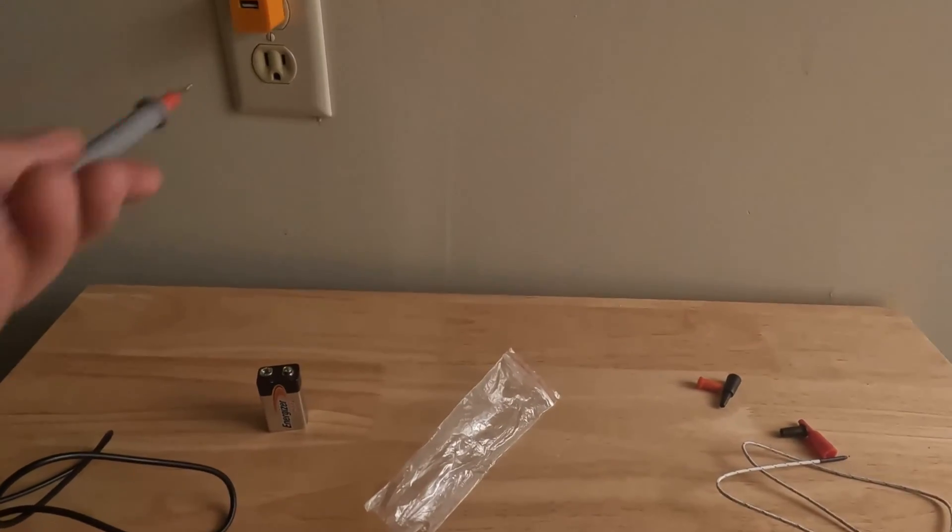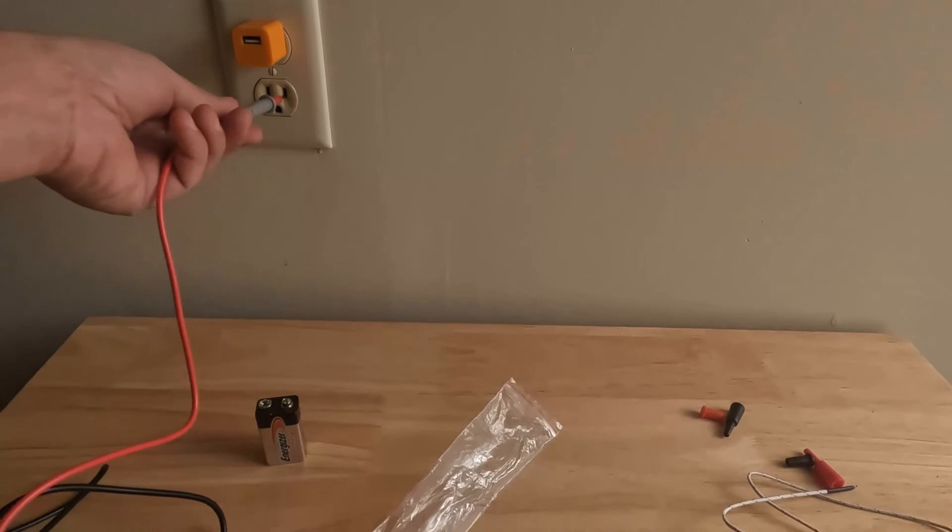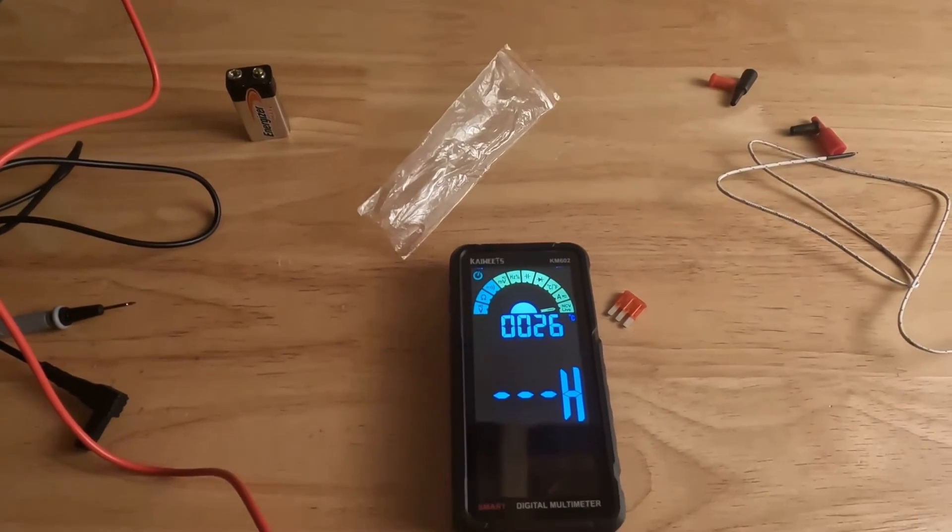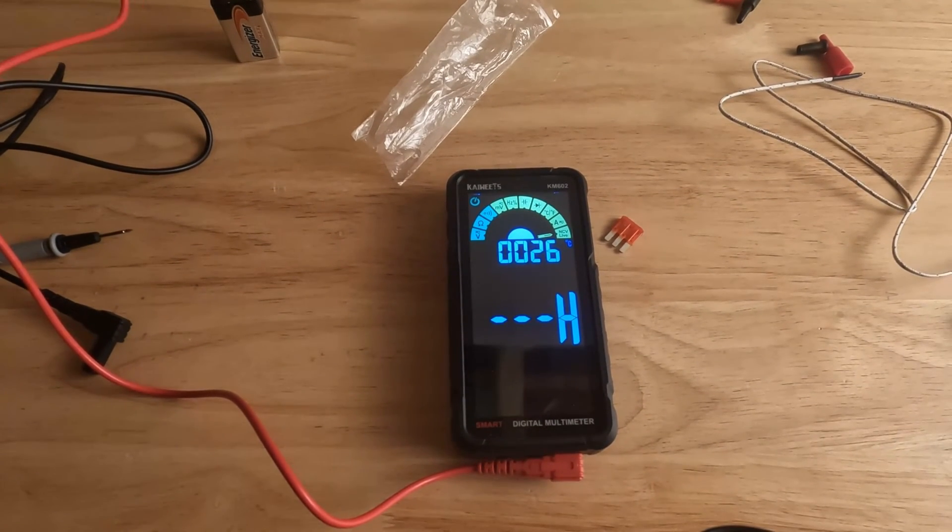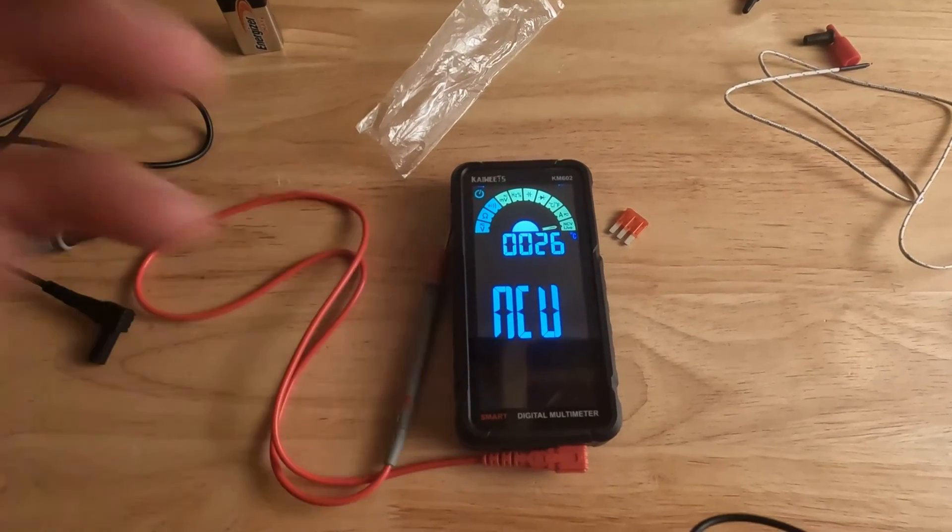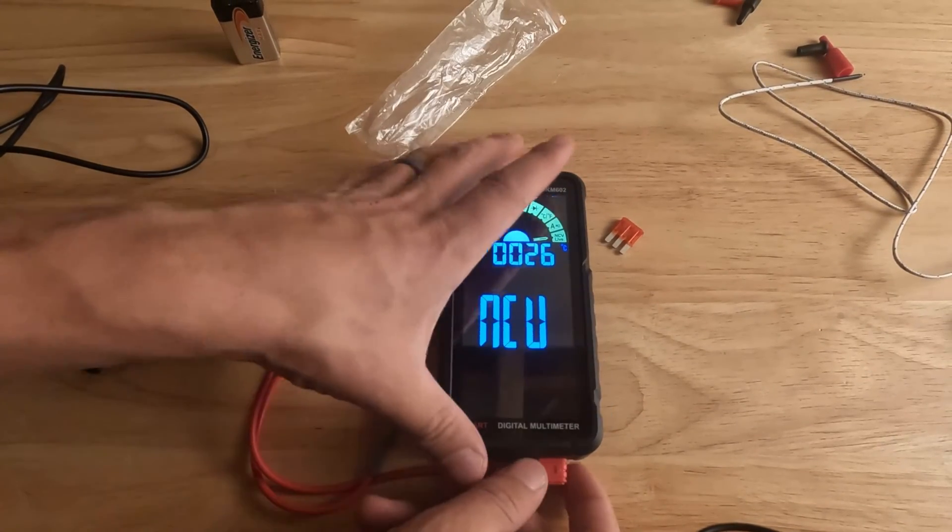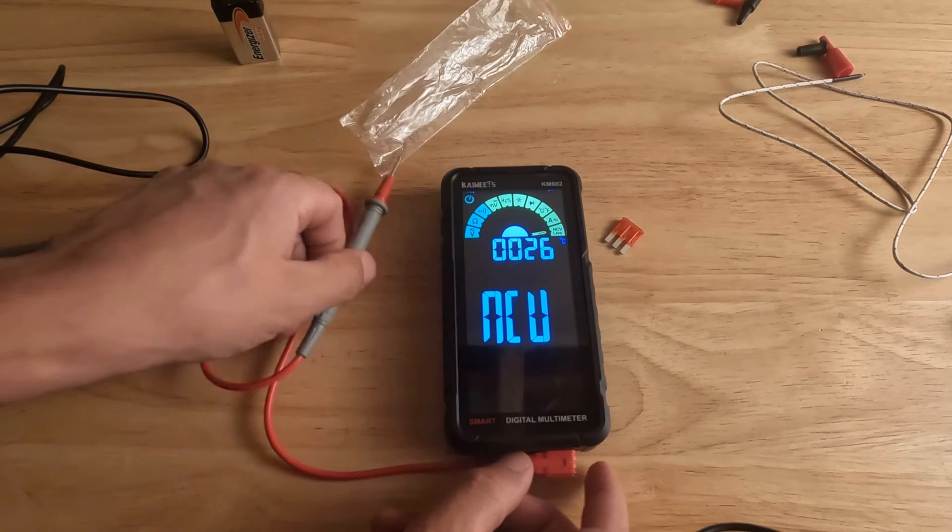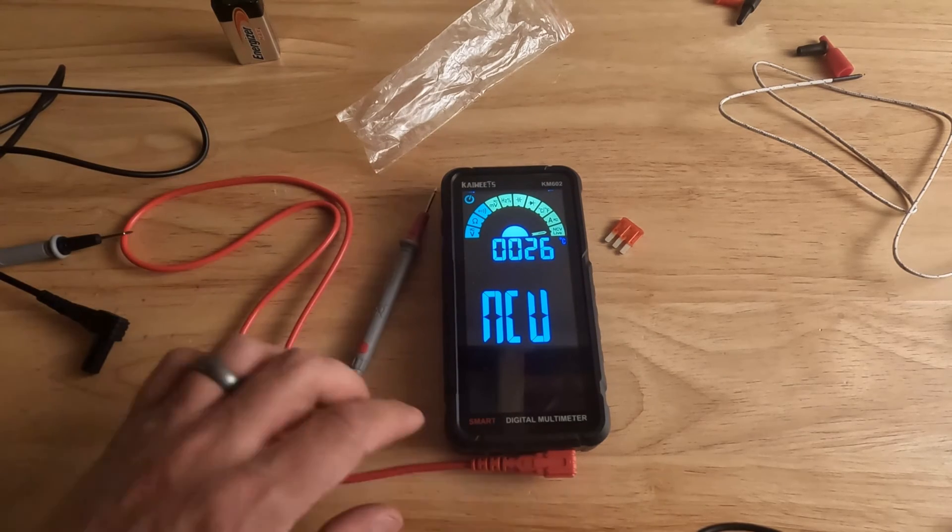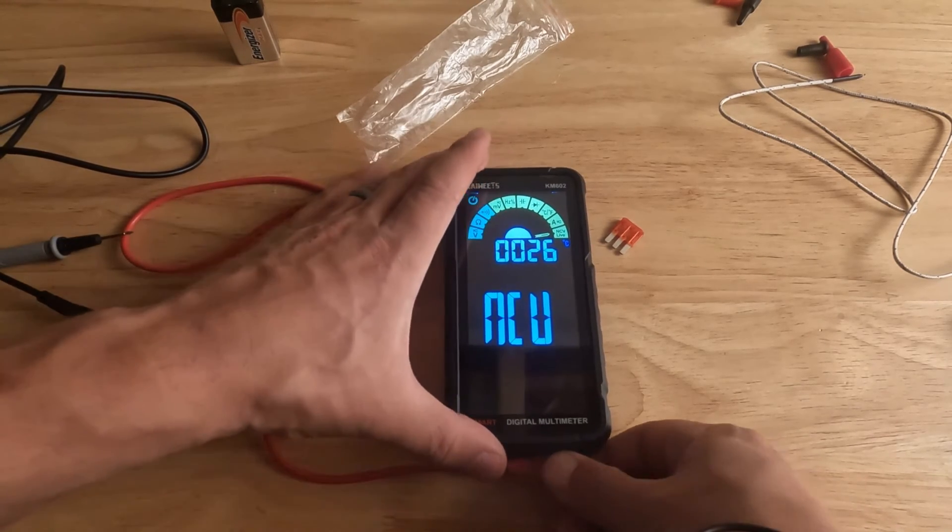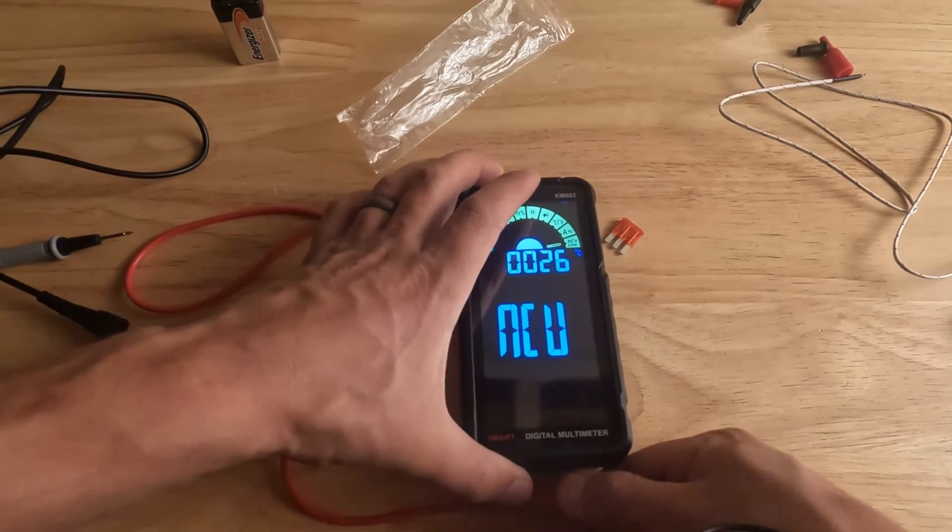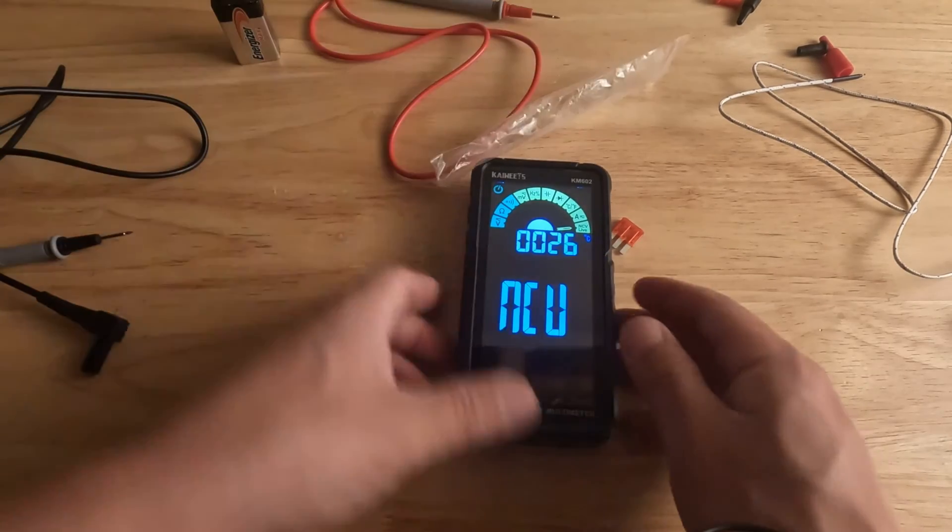Then we'll test our outlet. Let's say we don't know if this outlet is hot or not. We could stick this in. It tells us it's hot, so we know we're working on a hot outlet or any sort of hot wires. This is good for testing. It's pretty much the same as a tick tester that you guys are used to using. It just kind of doubles as that.